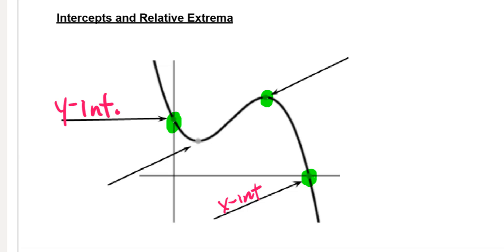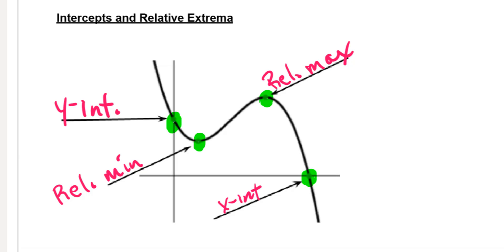Now there are these two other points that Desmos can tell us about, and these spots are going to be maximums or minimums. Whether they're called absolute or relative depends on if there's stuff higher or lower than it. The one on the left would be a minimum, but since there are parts of this function lower than that spot, it's called a relative minimum — you can abbreviate it REL. Similarly, the other spot on top of a hill is a maximum, but since there are parts of the curve higher, it's just a relative max.